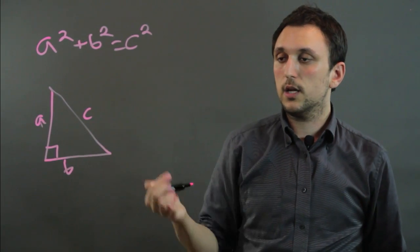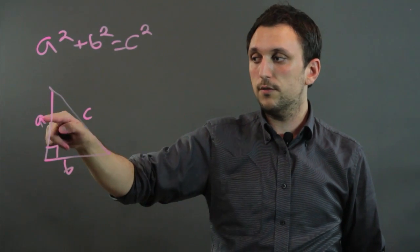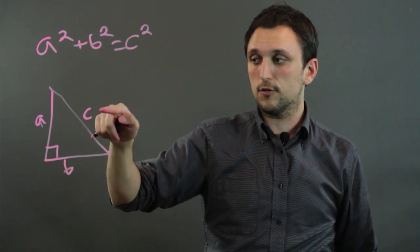So if you have a, b, c, this line, this hypotenuse in a right triangle, is always the sum of these two squared, and then you take the square root.